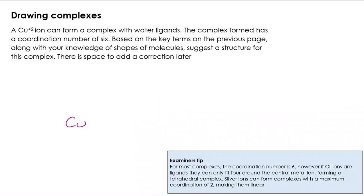Let's move on and have a go at drawing complexes now. A copper ion will form a complex with water ligands. It will have a coordination number of six, so that means six coordinate bonds. What do you think it might look like? Have a go. The first thing to think about here is that the six coordinate number means six bonds, and that makes us think octahedral. So I'm going for the octahedral shape that you will know from year 12.